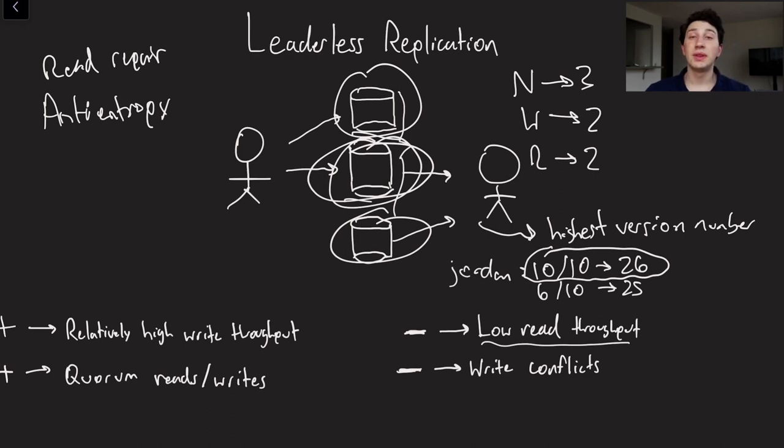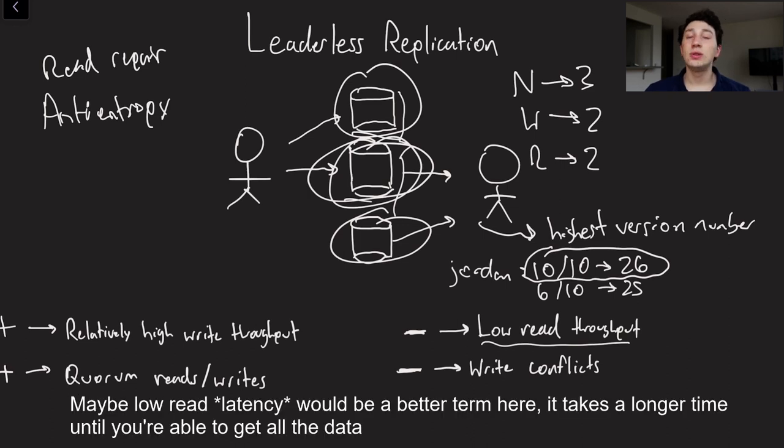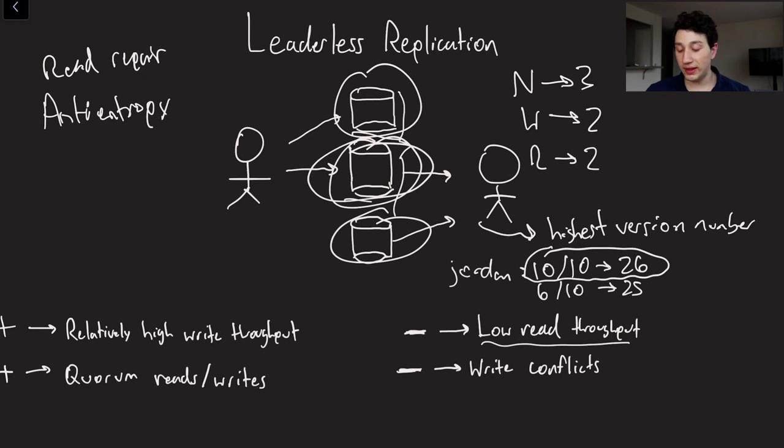Then on the other hand, we also have low read throughput. Why is that? Well, for starters, you're now reading from a bunch of different places. So if you have to read from, say, five different places instead of reading from one different place, it's going to take a lot longer to ensure that you are going to get all of that data. You can read in parallel, but it's likely that one of those nodes might be a little bit slow, and then that's going to slow things down.